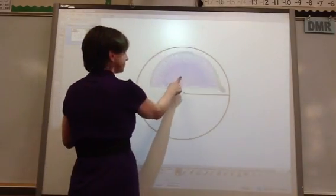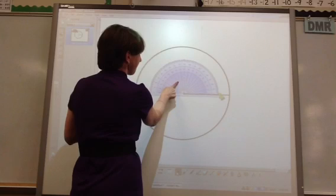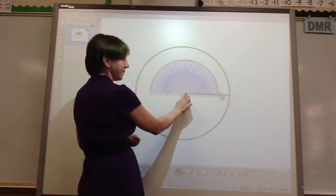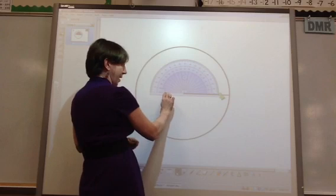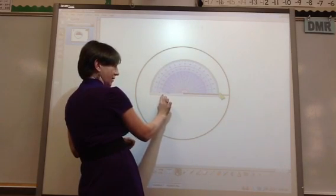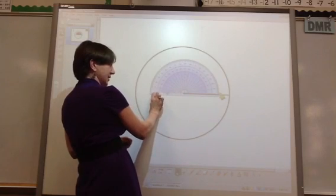On the smart board, it would look like this. I have the center mark lined up, and then I have this bottom line right here that says zero—not actually the bottom of the protractor down here, but the first line up that says zero. That's going to be my zero line.